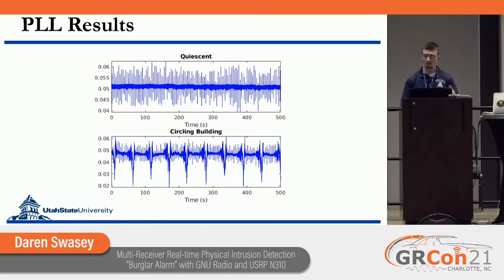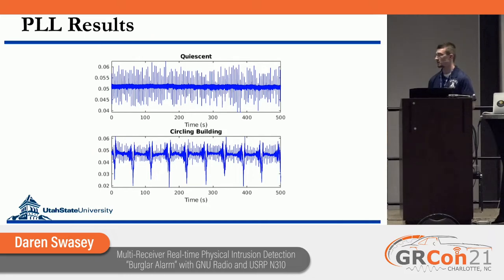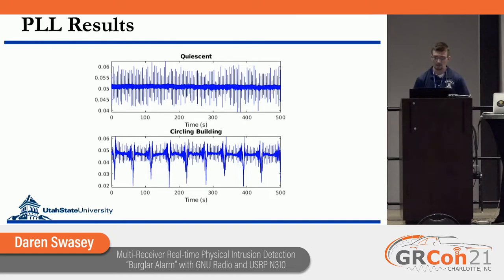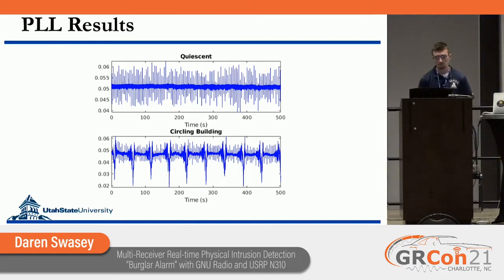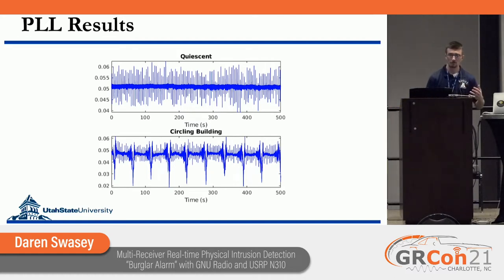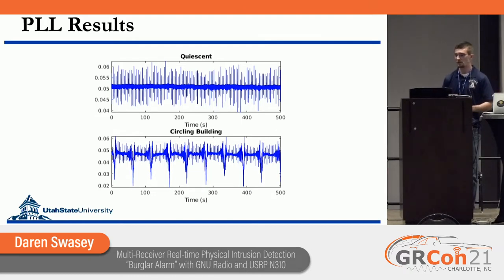Here are the results, and there's a pretty clear difference. The top is the quiescent case — I would start the test, leave the building, wait about 10 minutes, then come back in to get a good baseline of what it looks like when nobody's there. You can see it's pretty consistent; nothing's really going on. On the bottom is the active case — as I was circling the building you'd get these big variations every time I passed that receiver. So obviously there's something going on and we can use that to detect if somebody's there.